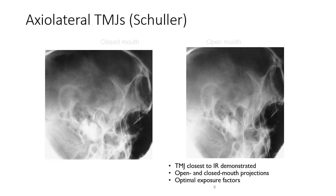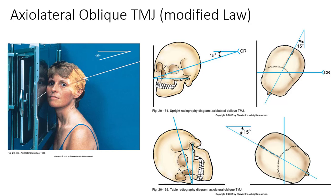For the axial lateral oblique TMJs, or modified Law method, the patient can be positioned semi-prone or seated upright. One exposure made with the mouth closed, and if possible, another with the mouth open. Start with the patient's head in a lateral position, with the interpupillary line perpendicular to the IR plane and the acanthiomeatal line parallel with the transverse axis of the IR. Center at a point 1.5 inches anterior to the EAM, or the TMJ side down. Then rotate the patient's head 15 degrees toward the IR, and rest the patient's cheek against the grid device.